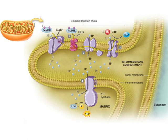Now, look at the second enzyme of the transport chain. FADH2, which is produced in the Krebs cycle, contributes electrons to the transport chain at this second enzyme. Like the electrons donated by NADH, the electrons donated by FADH2 also release energy as they travel through the third and fourth membrane proteins of the transport chain.